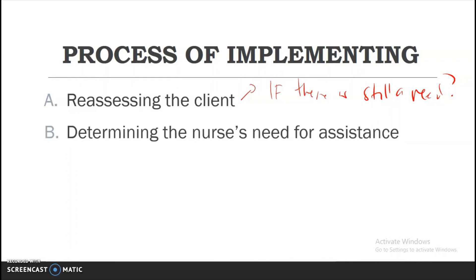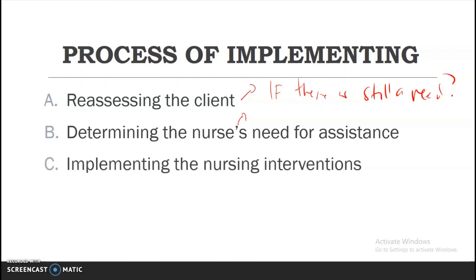Another step in the process is determining the nurse's need for assistance. A good example is when working in western countries such as the US or UK, where patients may have a larger physique compared to Asian nurses. In terms of lifting and carrying patients, you may need to call for assistance from fellow nurses or nursing assistants. Once you have reassessed and confirmed there is still a need, and you have determined whether assistance is required, you may proceed and implement the nursing interventions.